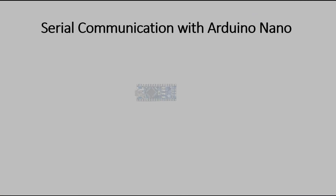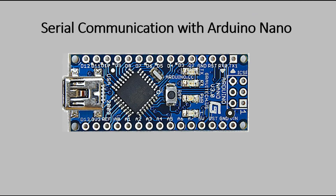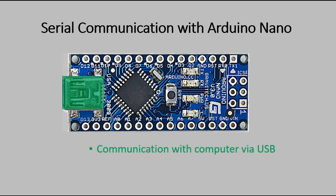Every Arduino board supports serial communication. For example, for Arduino Nano, which we are using here in this video, we can communicate with the serial monitor on your computer via USB connection, but also you can connect via digital pins 0 and 1 if you're using some external serial monitor. Those pins are dedicated for this and should not be used for any other purpose, so for instance you cannot do digital read or digital write actions on those pins.